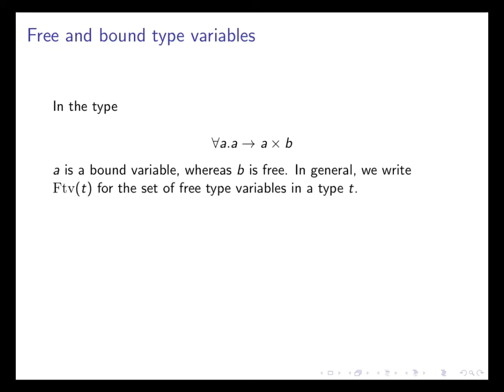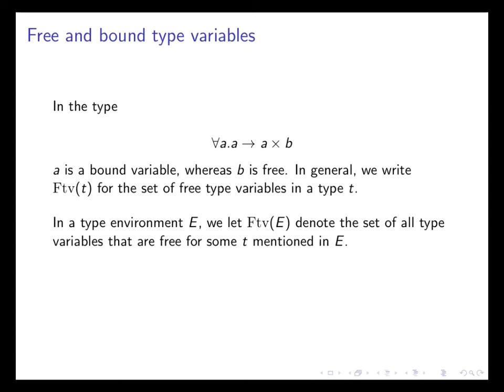In general, we will write FTV of T for the set of free type variables in a type T. And if we have a type environment E, we will let the free type variables of E denote the set of all the type variables that are free for some type that's mentioned in E. So that way, we can also find the free type variables of a type environment.